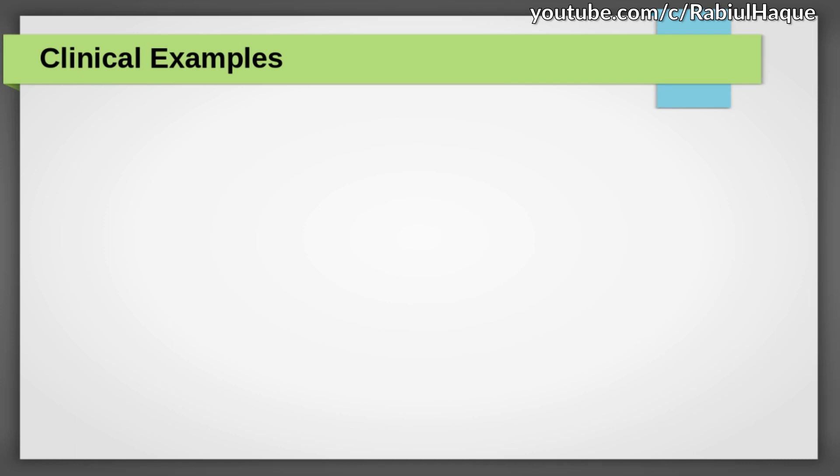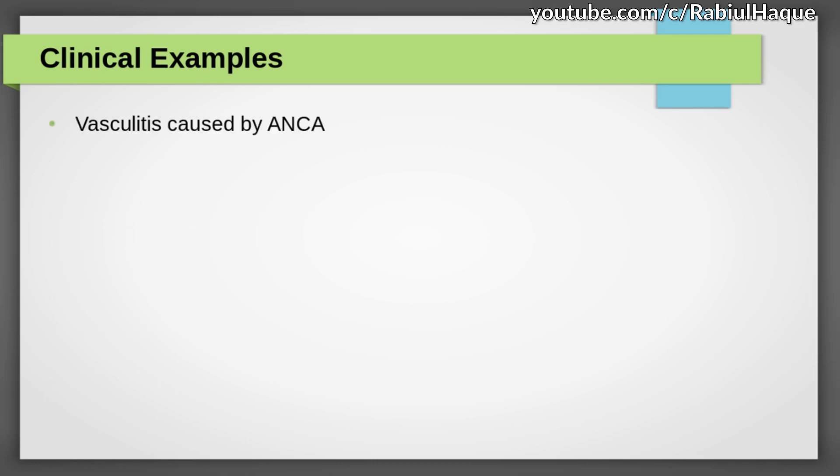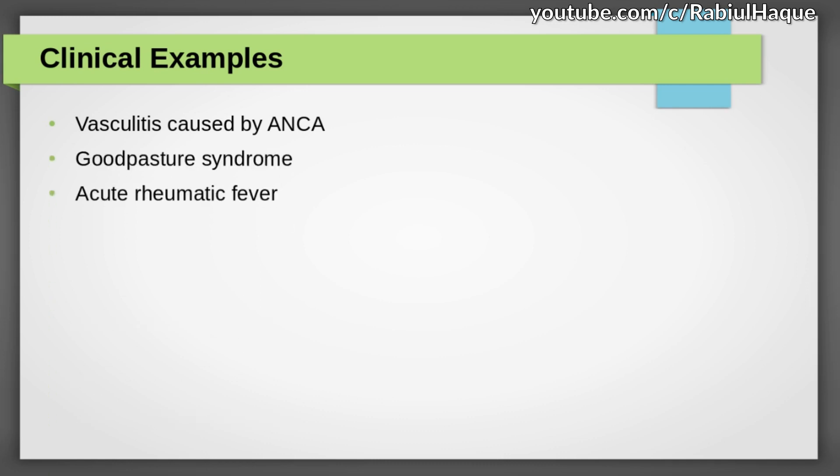Now let's talk about some clinical examples of type 2 hypersensitivity that occur by the mechanism of inflammation. They include vasculitis caused by antineutrophil cytoplasmic antibodies, Goodpasture syndrome, acute rheumatic fever, etc.